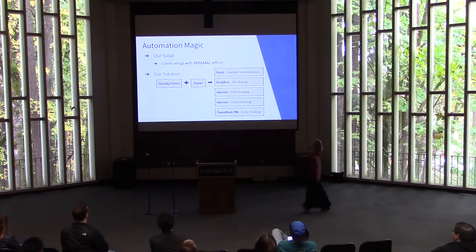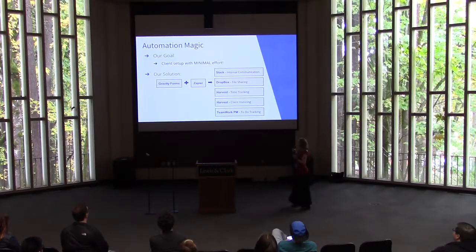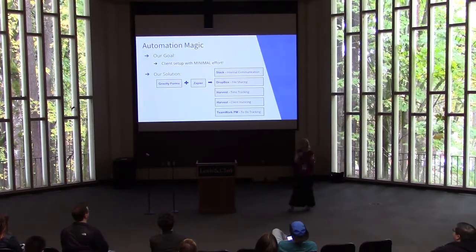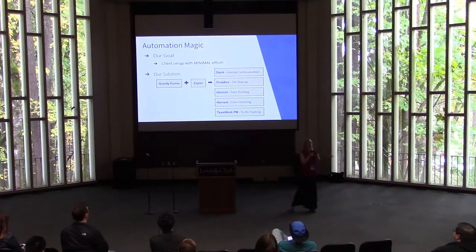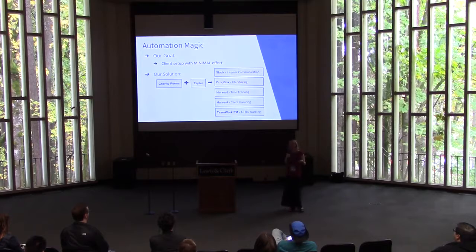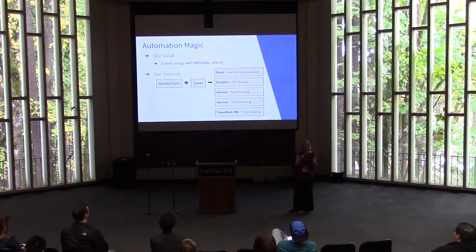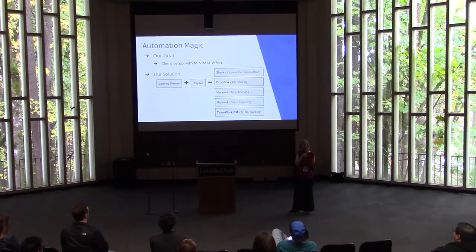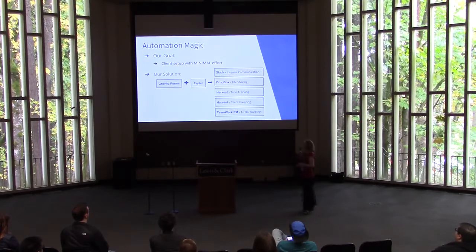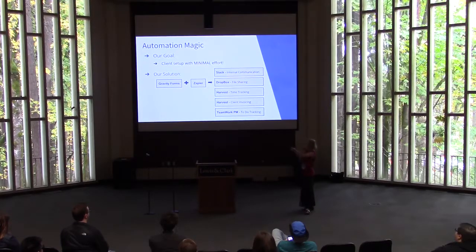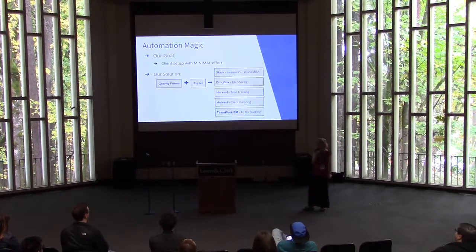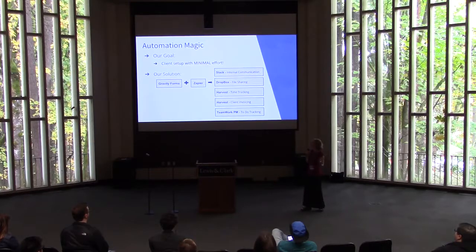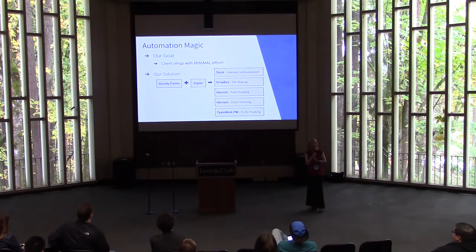When you bring someone on board, you're going to put them in systems like Slack for internal conversation, Dropbox for a folder, your to-do software, time tracking, and invoicing. All of these systems require the same basic things: the client's name, email, and project name. And you're sitting here setting this up every time. This is ultimate cloning. I have one form on my website, I use Zapier, and I do a happy dance every time I execute it because it's done correctly, consistently, every single time.